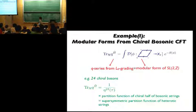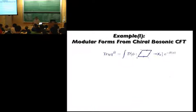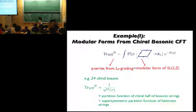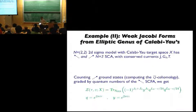This is also the supersymmetric partition function of the heterotic string, because on the supersymmetric side everything is in the ground state. Now let's move on to a slightly more complicated example where we get not a modular form but a weak Jacobi form.